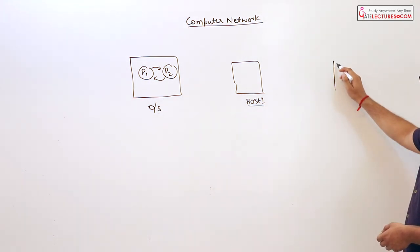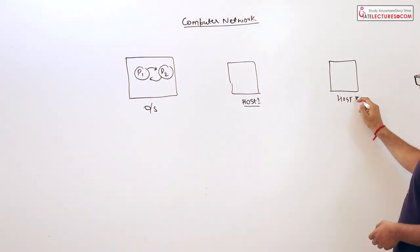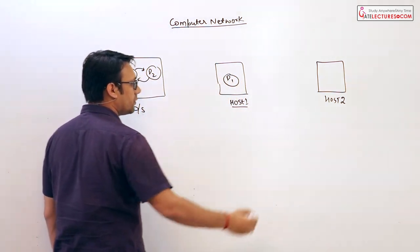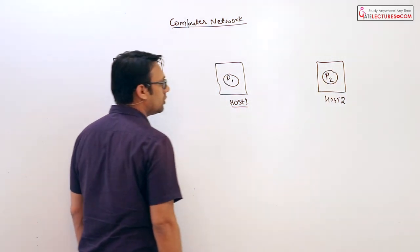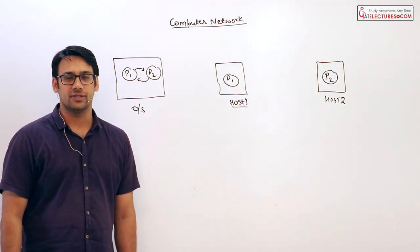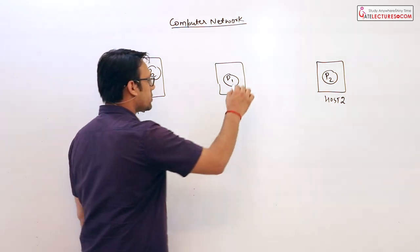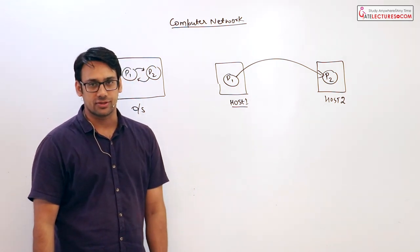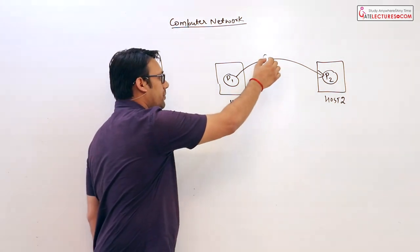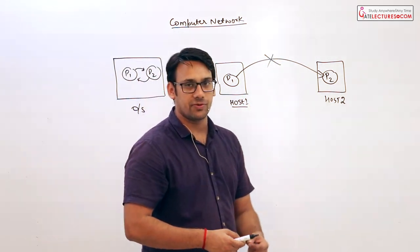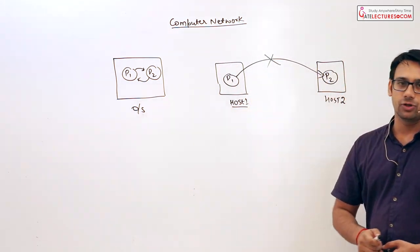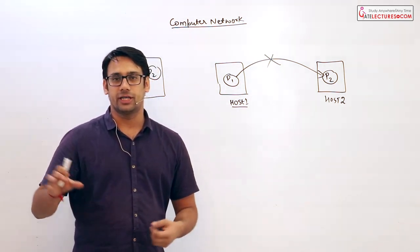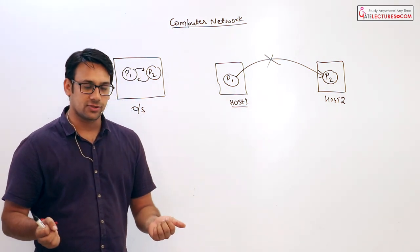We have Host 1 and Host 2 — two different machines. If Host 1 has a process P1 and P1 wants to communicate with process P2 on Host 2, the problem is that if there is no connection between these two machines, this communication will not be possible at all. So obviously we need some kind of connection between them so that they can perform communication effectively. But just connecting with wires is not enough.